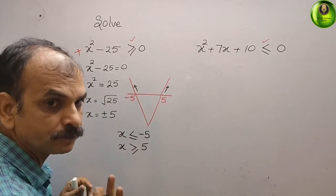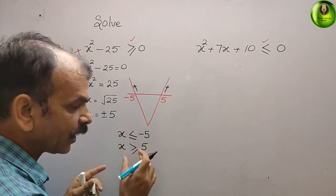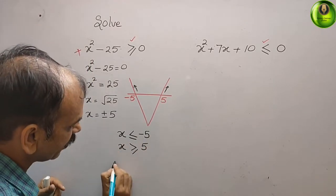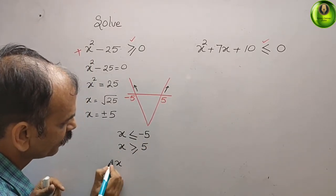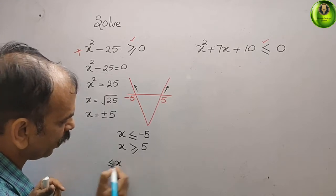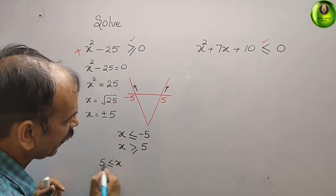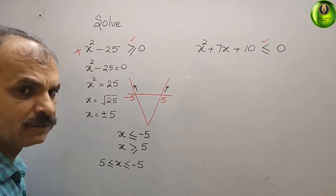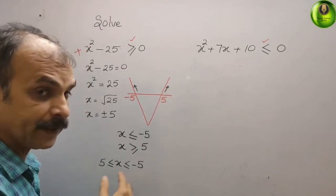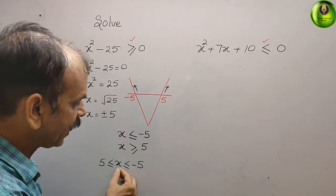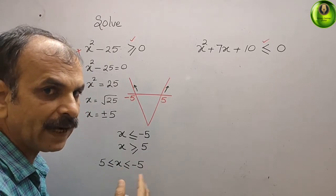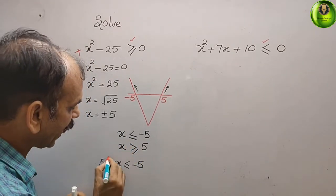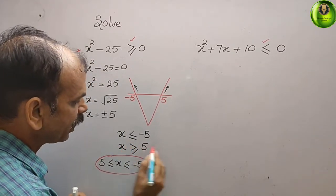Now we will try to correlate it. If you write x in the center, x should be greater than or equal to 5 here, and x is less than or equal to minus 5. Is it possible? x greater than 5 and x less than minus 5 — there is no correlation between them. Therefore, we will write this as a union (r).